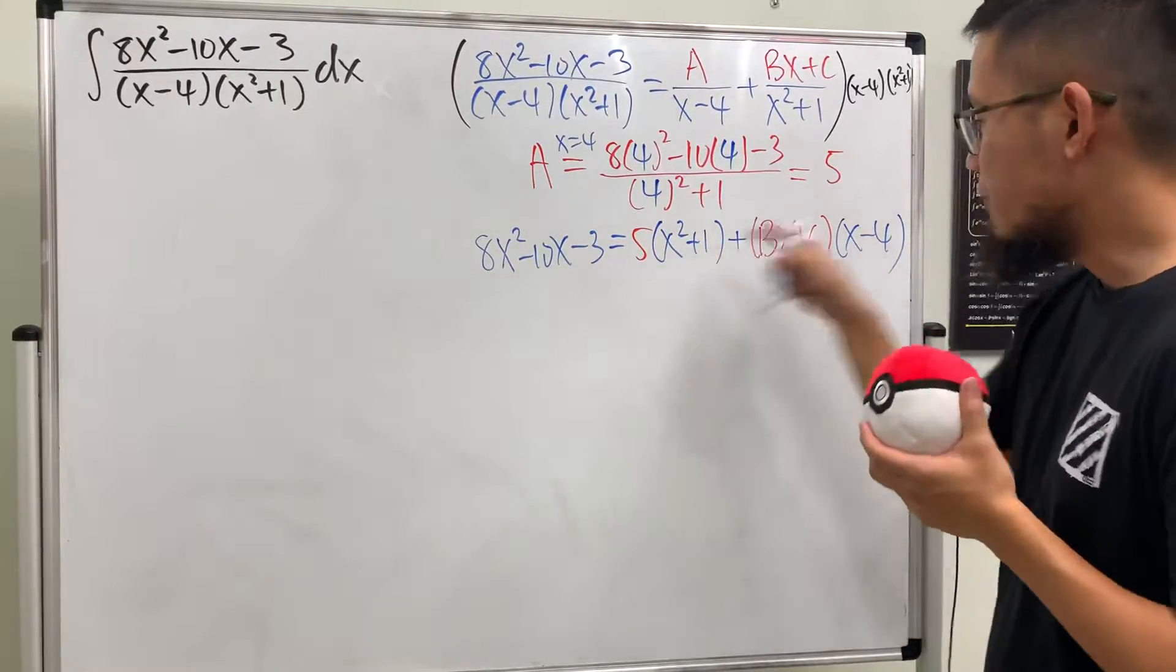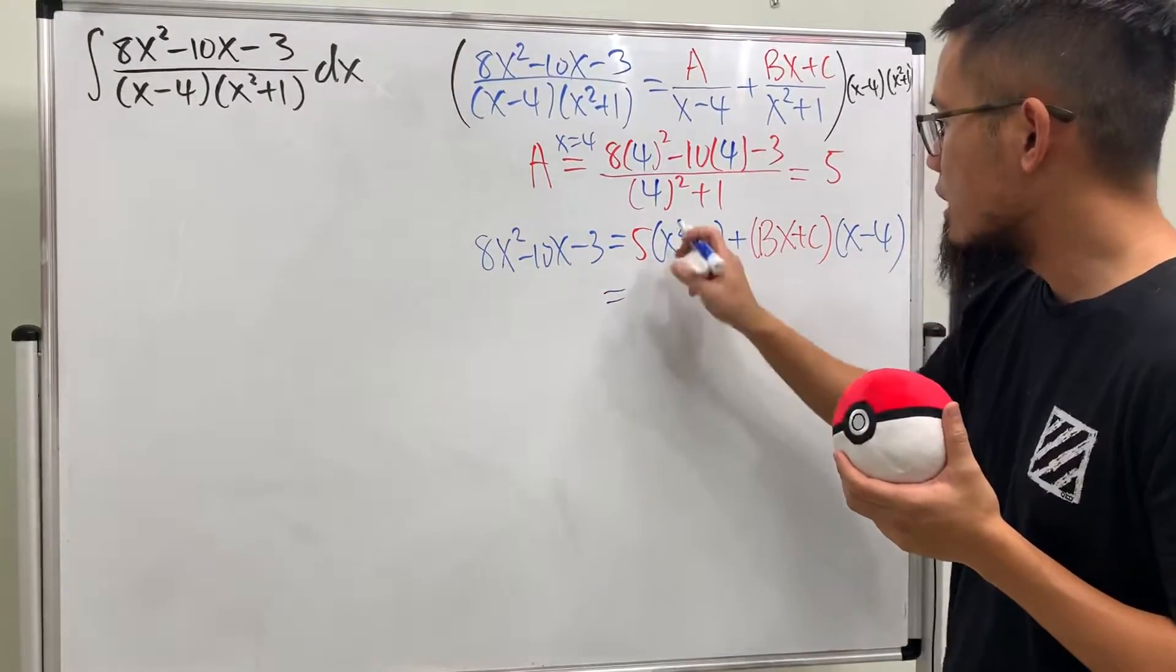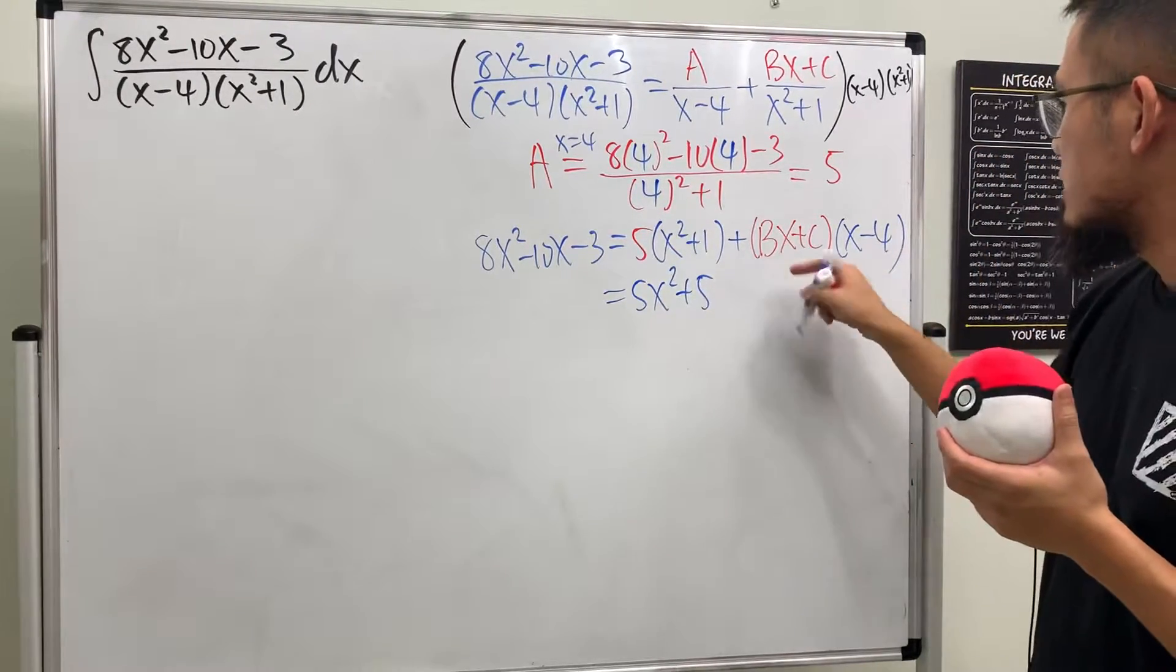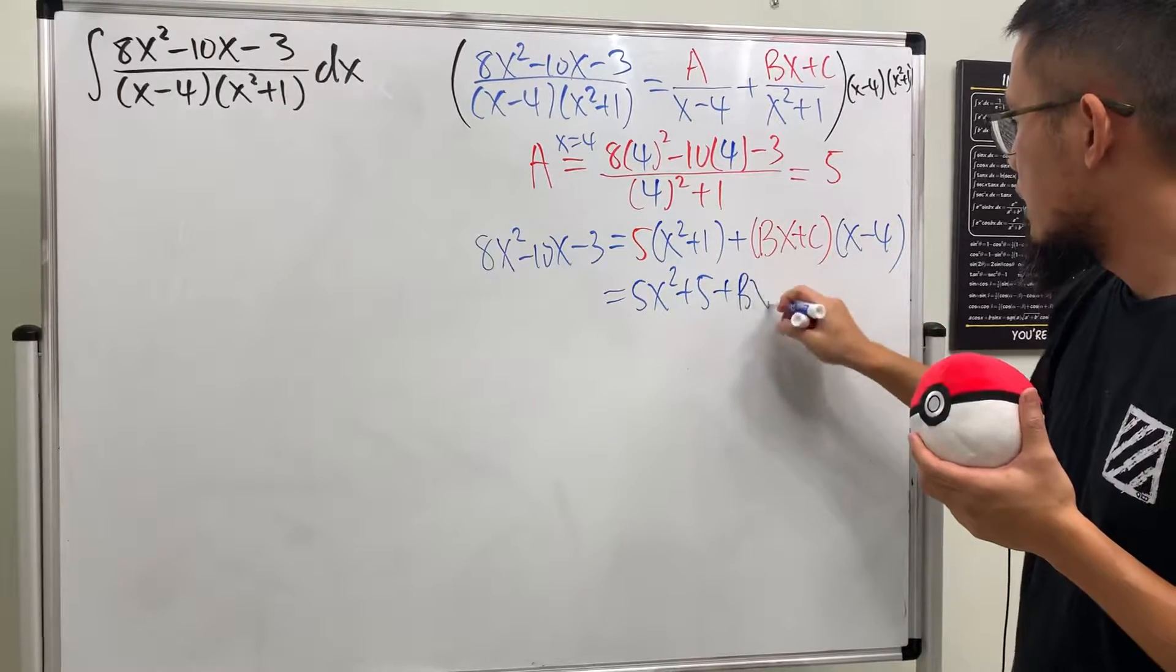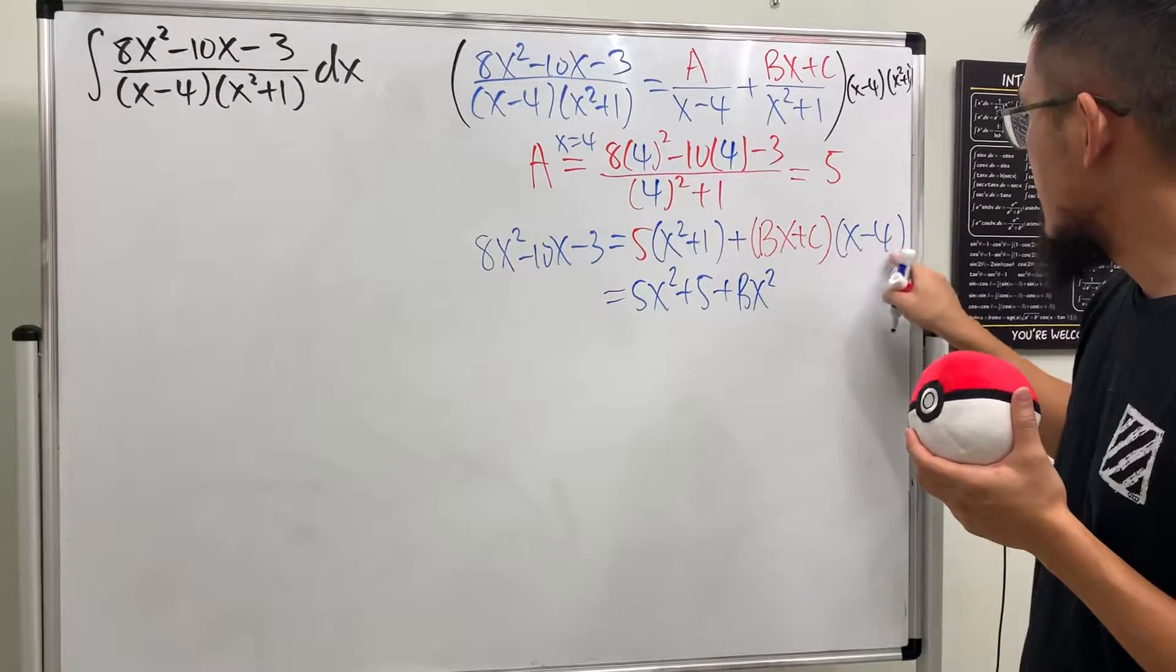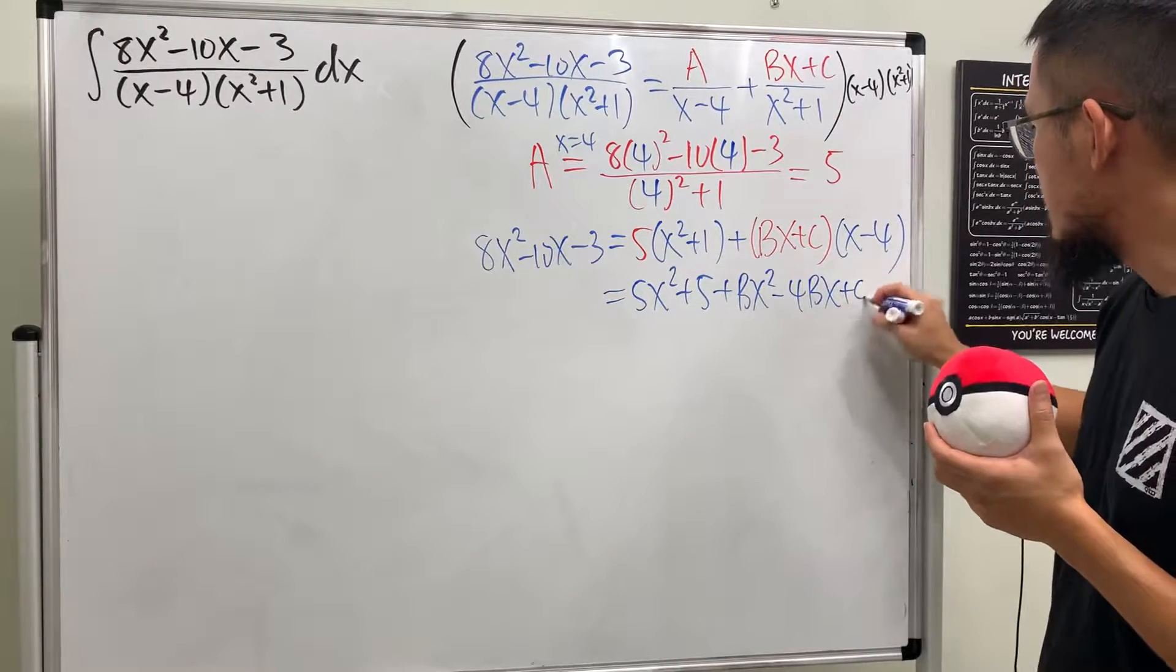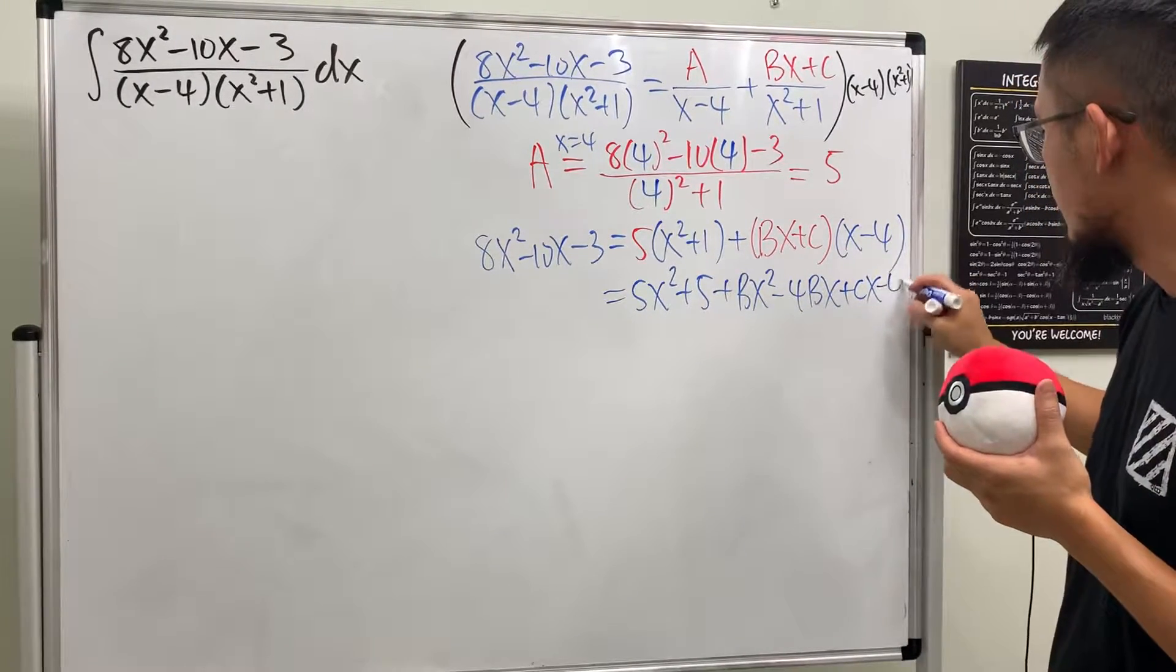The rest is just algebra. Let's focus on the right-hand side. This gives us 5x² + 5. This gives us Bx², and then this times that is -4Bx, and then this and that is +Cx, and lastly is -4C.